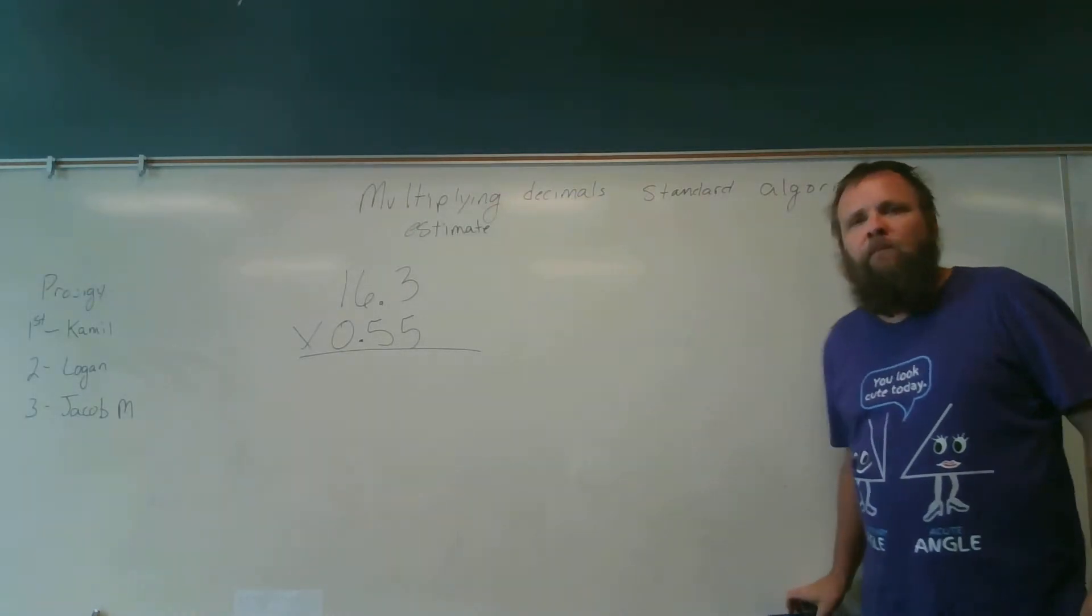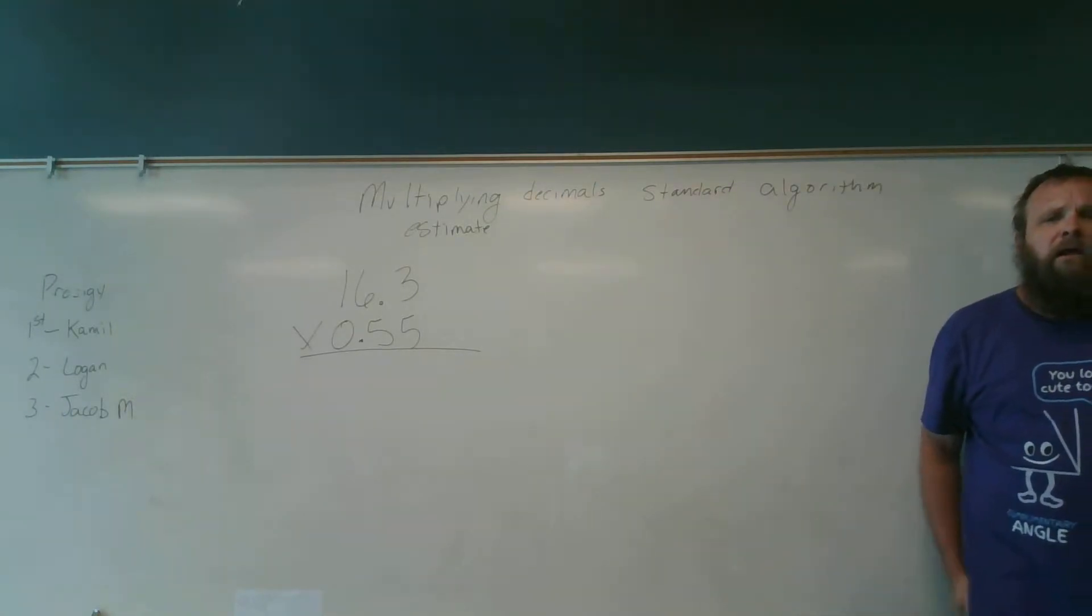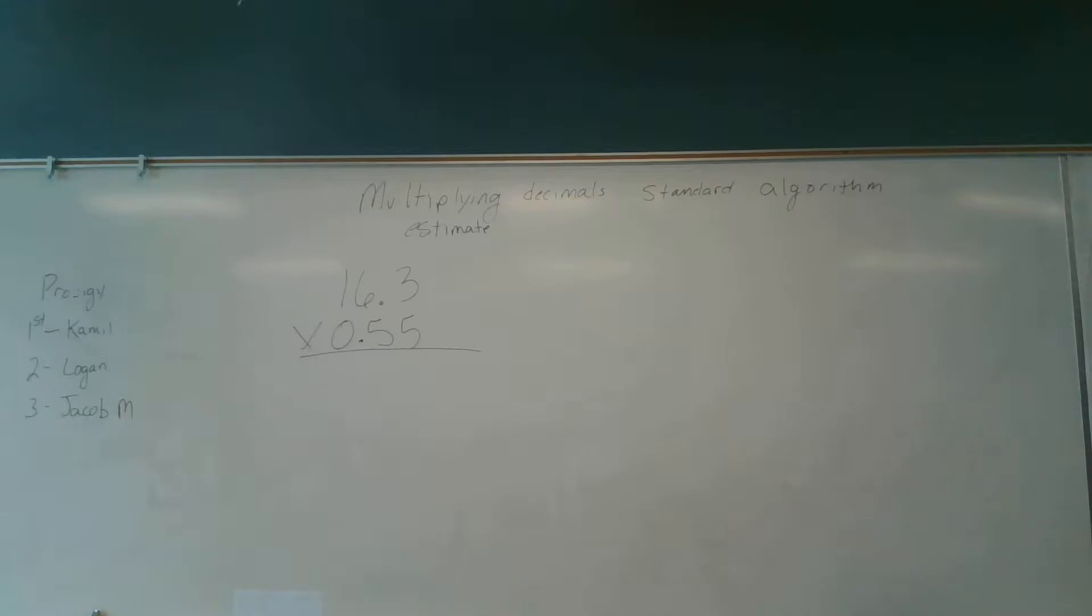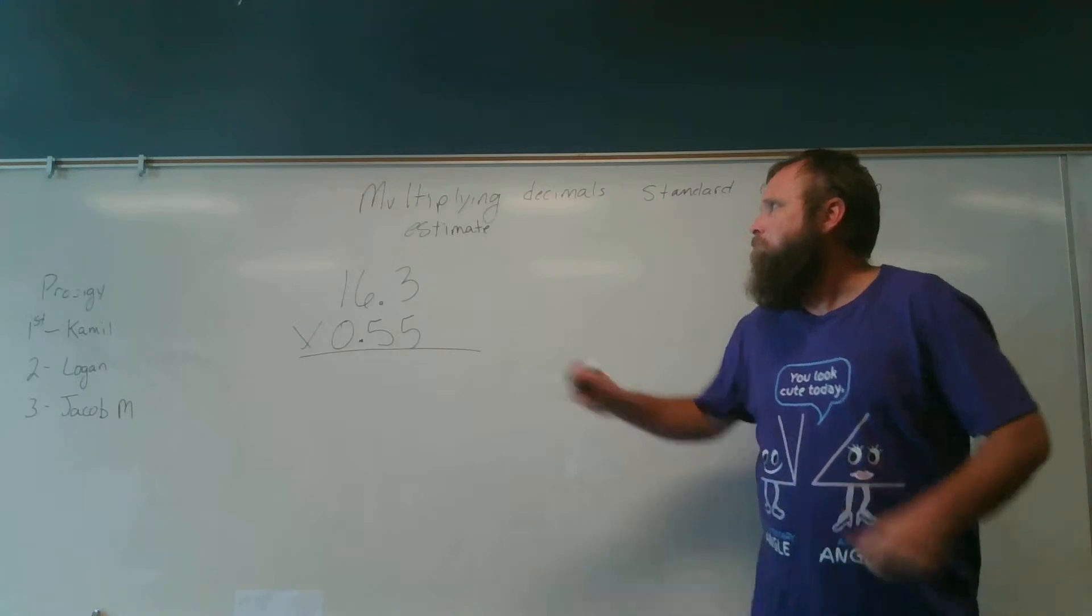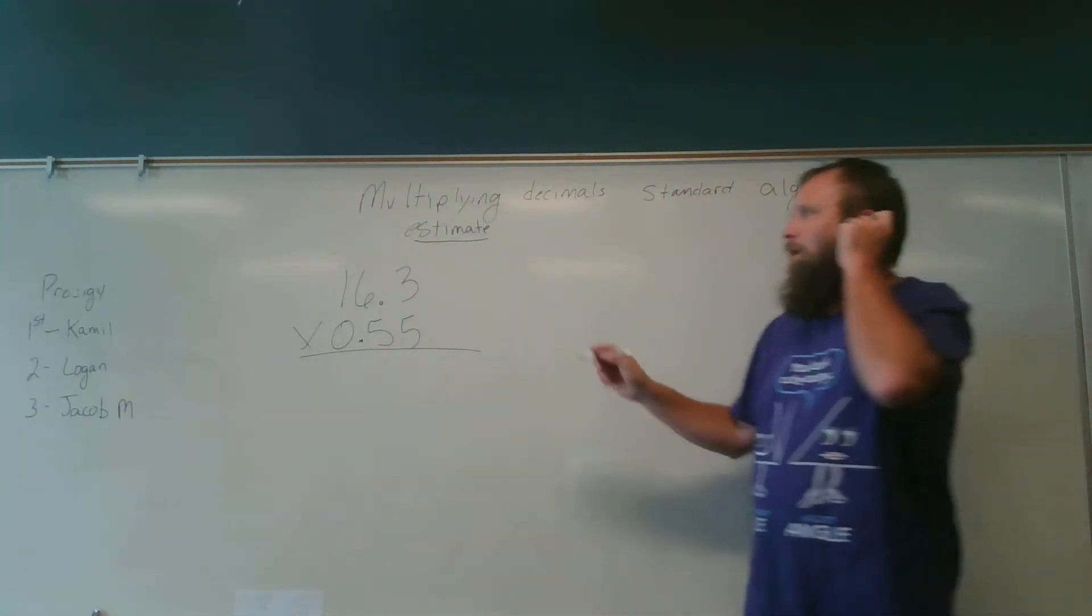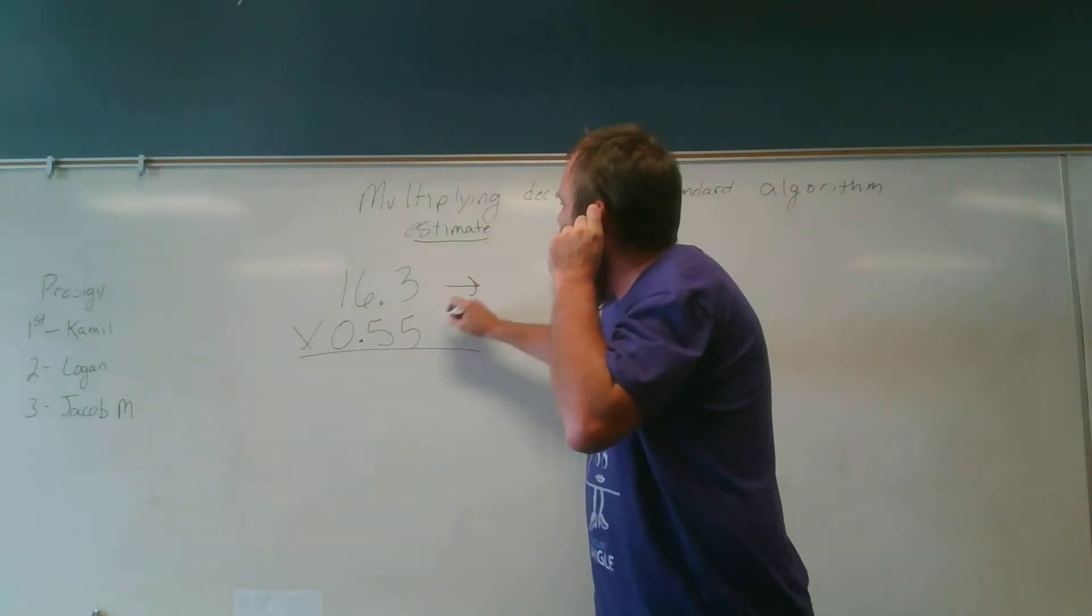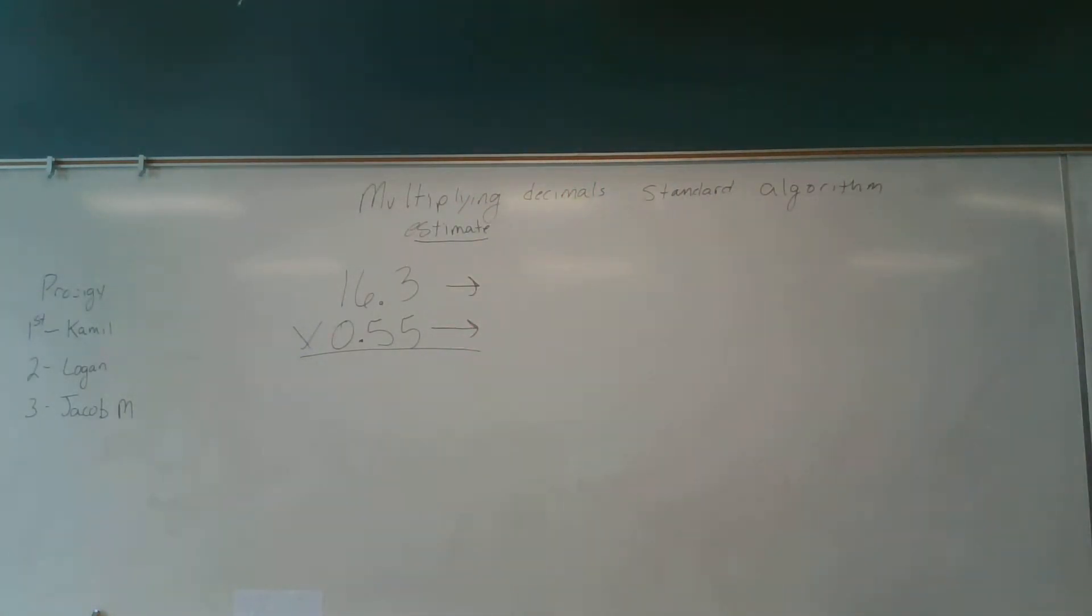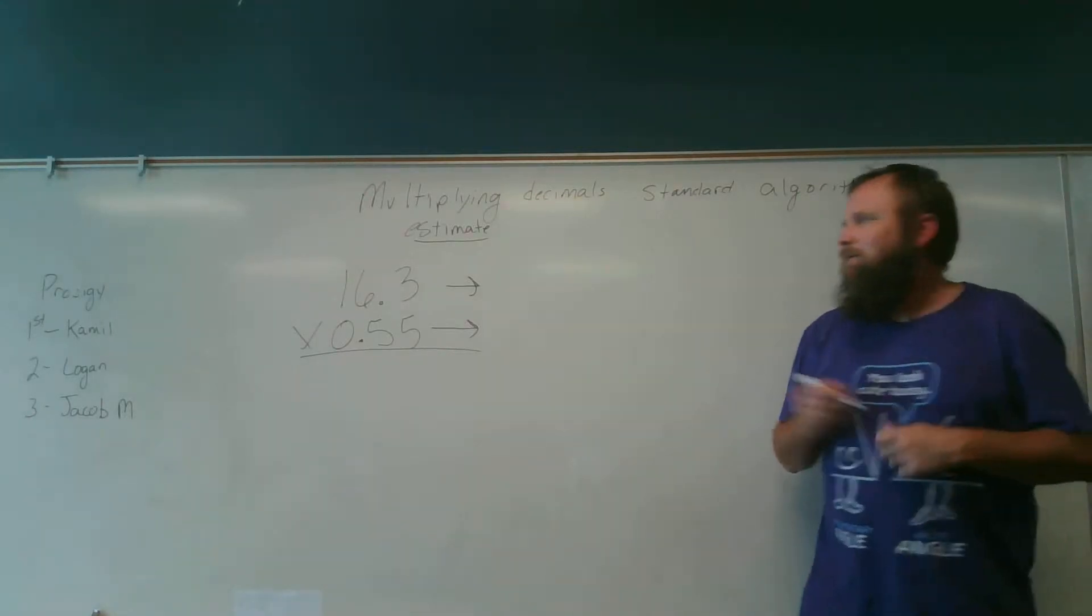But we're going to need this room here. So Andrew, what is the first thing we're going to do when we multiply with decimal numbers? Estimate. Good. Andrew, so to estimate these, we're going to round them to the nearest whole number. So 16.3 you'd round to what Andrew? 16.